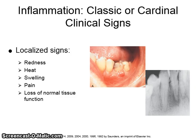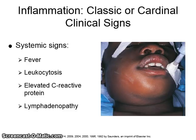The classic or cardinal signs of inflammation include localized signs such as redness, heat, swelling, pain, and loss of normal tissue function. Systemic signs include fever, leukocytosis, elevated C-reactive protein, and lymphadenopathy.